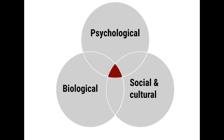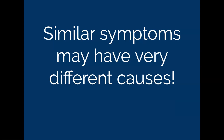This is a graphic that you have seen many times before in class. It's simple but it's a good reminder of how we can never fully understand human behavior without accounting for all three types of influences: biological, psychological, and social and cultural. All of the causes of depression that I'm about to show you are ones that are supported by empirical evidence.